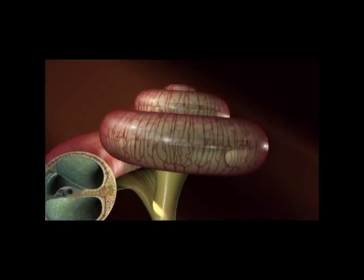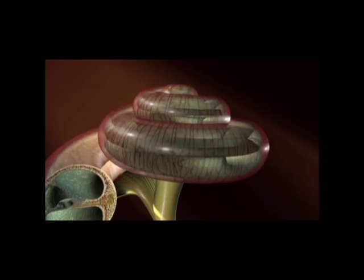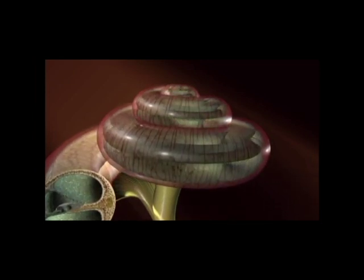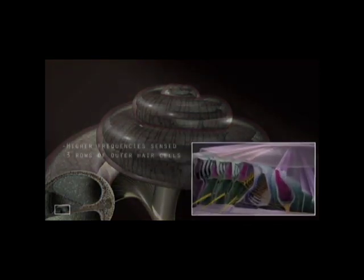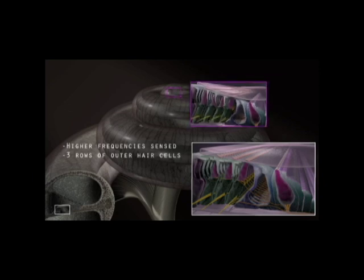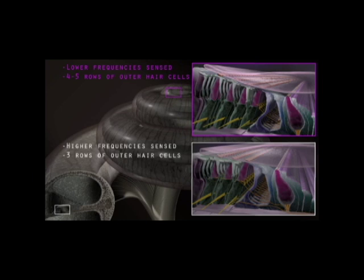This arrangement of the components of the organ of Corti changes from the base of the cochlea to the apex. At the base of the cochlea, where higher frequencies of sound are sensed, there are three rows of outer hair cells. This increases to four or five rows at the apex, where lower frequencies are sensed. Cell and stereocilia length also increases at the apex, causing a more severe angle in the apical surface of the organ of Corti.